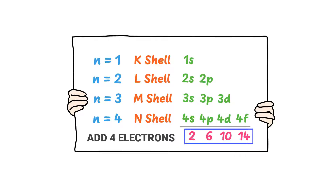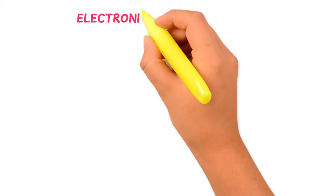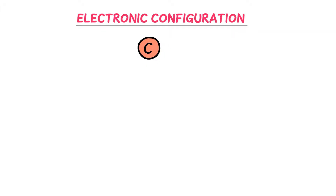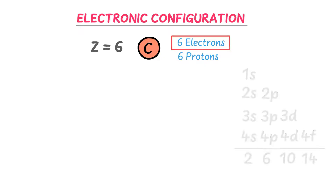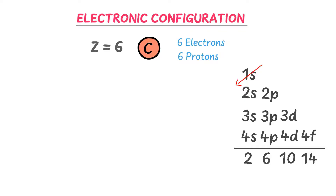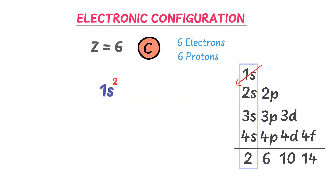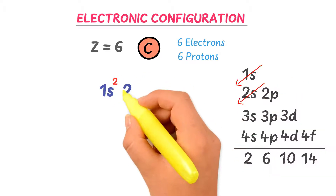Now let me teach you the electronic configuration of the carbon atom. The atomic number of carbon is 6, meaning there are 6 electrons. I write 1s first — the s subshell can accommodate only 2 electrons, so 1s². Then I write 2s, which can also accommodate 2 electrons, so 2s².